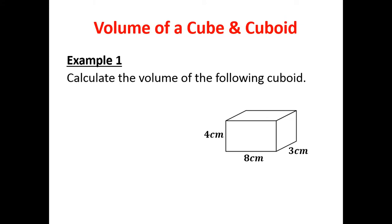Let's have a look at example number 1. Calculate the volume of the following cuboid. It has a base of 8, a height of 4, and a depth of 3. So the volume is equal to base times height times depth. We're going to go 8 times 4 times 3.